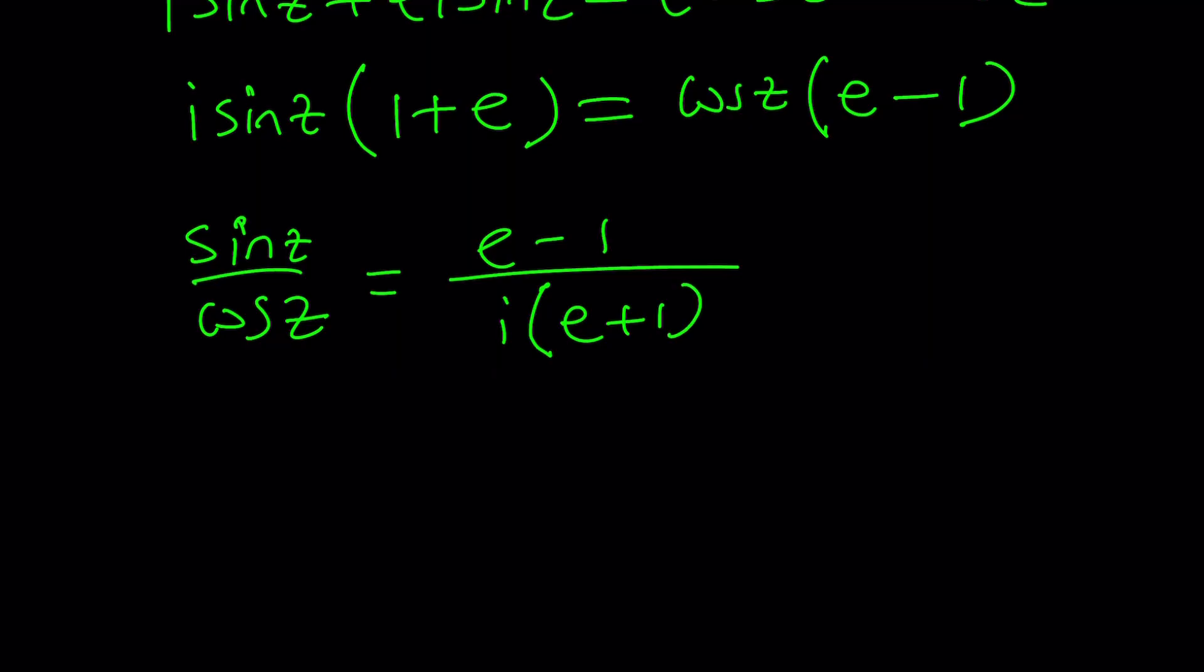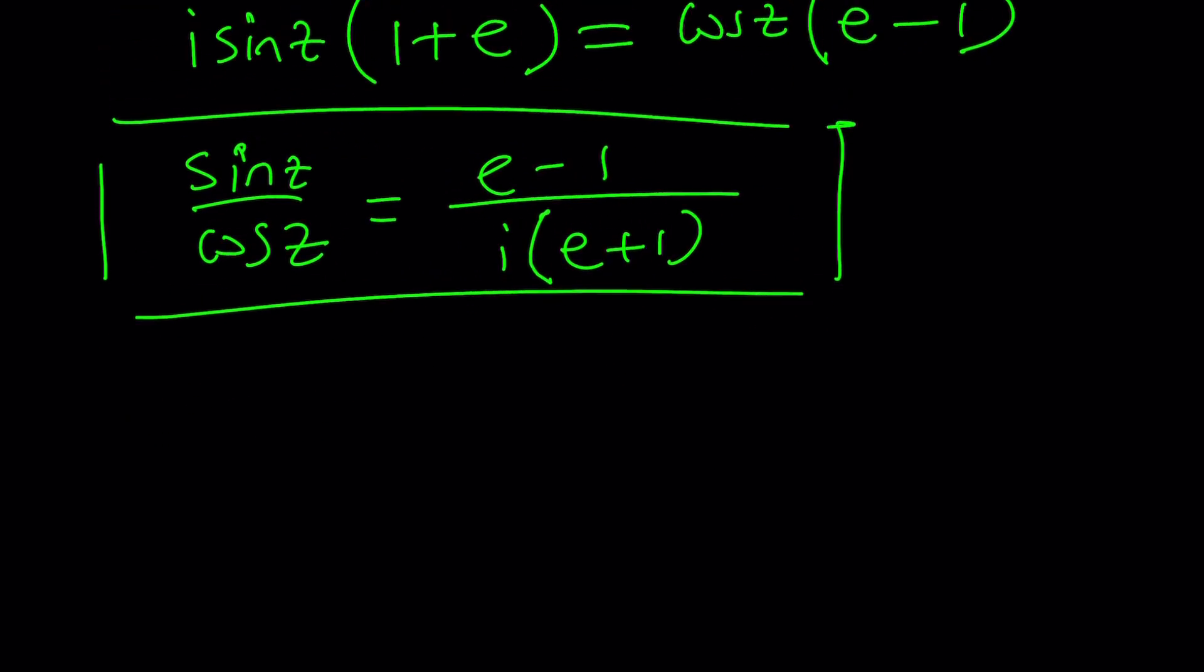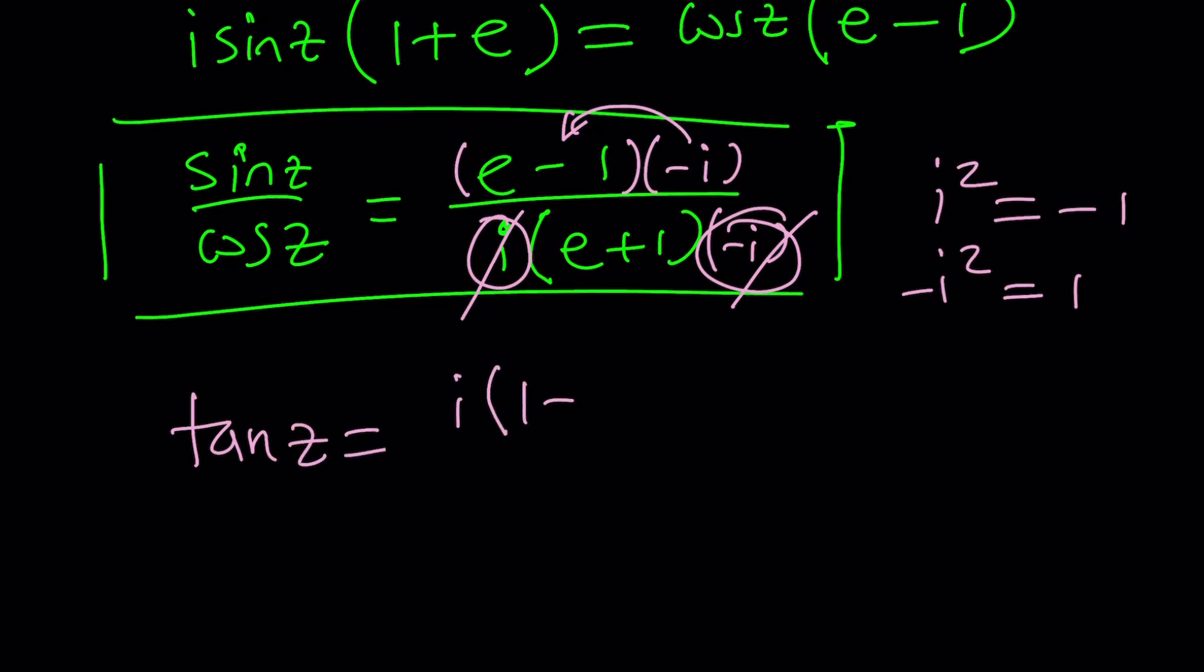Now we're going to go ahead and factor out i sine z because that's a common factor. That's going to give us 1 plus E. And on the right hand side, we can factor out cosine of z, which gives us E minus 1. Now we can go ahead and try to find tangent from here because I think tangent will be interesting. Sine over cosine. So we're going to bring the cosine over here. Of course, we have to make sure cosine z is never zero and that can be achieved.